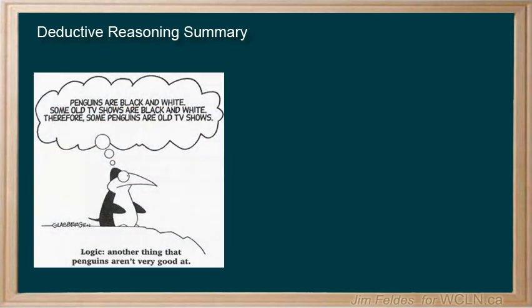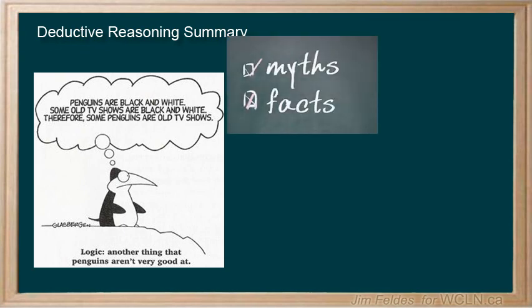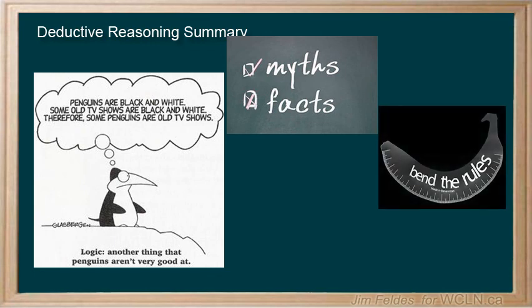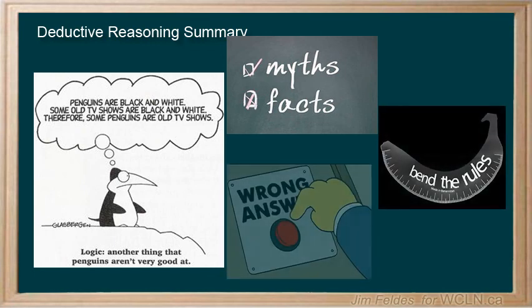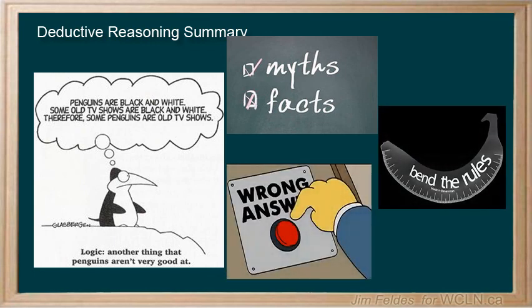But there's no room for premises that are not true, as they lead us to false conclusions. Nor can we bend the rules because we wish a different outcome. In math, or in life, this will lead to the wrong answers, and poor reasoning.